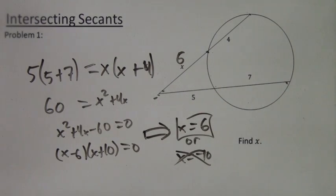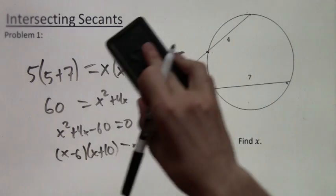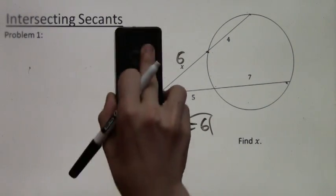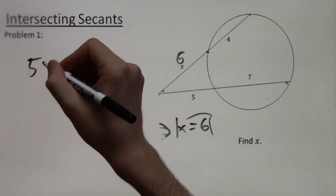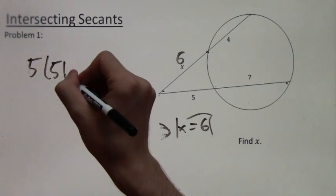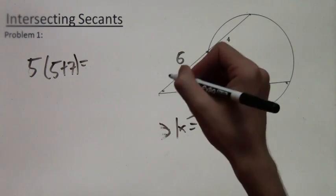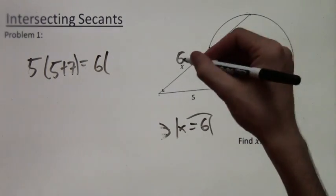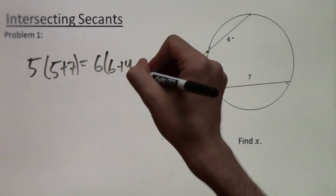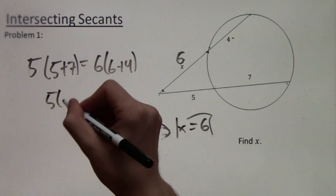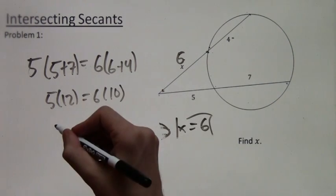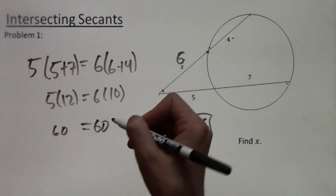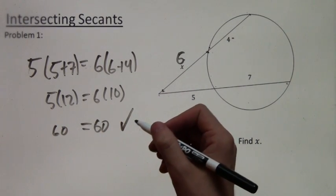And x equals 6 is our answer. Now we're going to do a quick check to make sure that x equals 6 actually does work. We have 5 times 5 plus 7, the whole length, equals short outer length 6 times the whole length, 6 plus 4. And this is the same as 5 times 12 equals 6 times 10. We multiply this out and we get 60 equals 60. And that's correct. So x must equal 6.